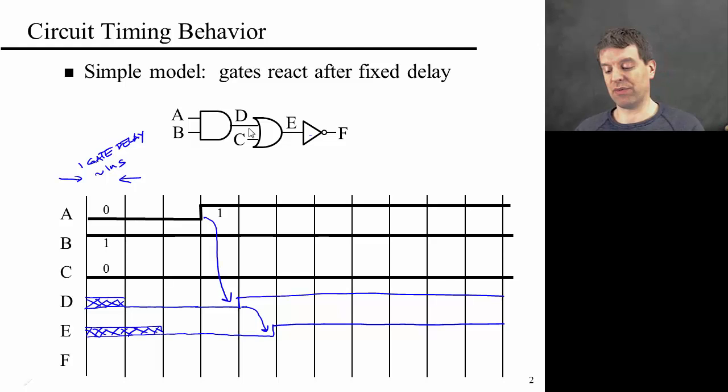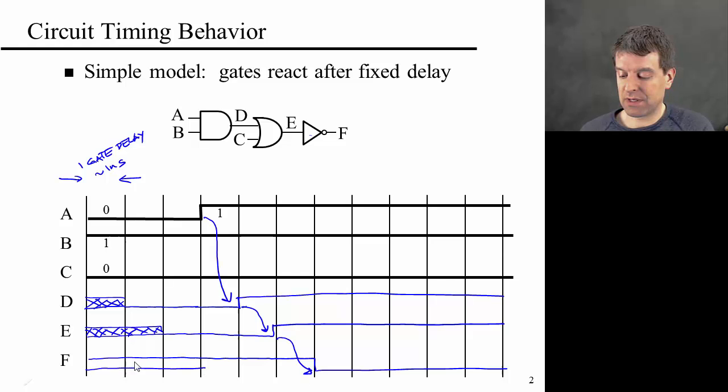And similarly, F follows, which is just the inverse of E, just follows with one gate delay here to here to here. And again, now for the first three time units, I can't know what that value of F is. So this slide should just get across this idea that gates take some actual finite time to compute. And so signals ripple through circuits gate by gate.